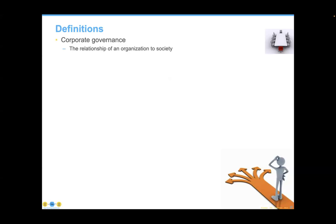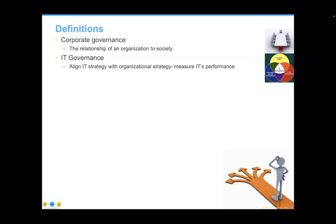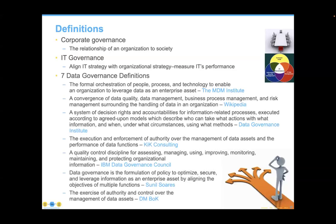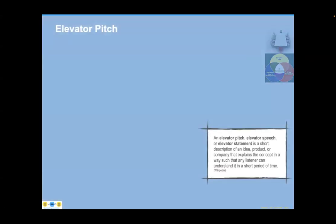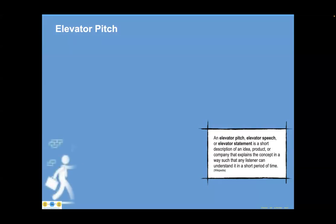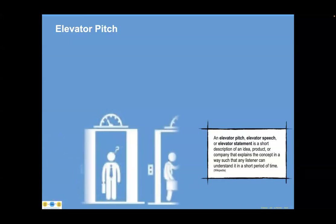Corporate governance is the relationship of the organization to society. IT governance follows from that. Here are seven definitions of data governance — one from our own DMBOK — but I want you to imagine trying to explain this in an elevator pitch. If your boss asks 'what is data governance?' and you respond with 'the execution and enforcement of authority over management of data assets and the performance of data functions,' the boss is not really going to understand.